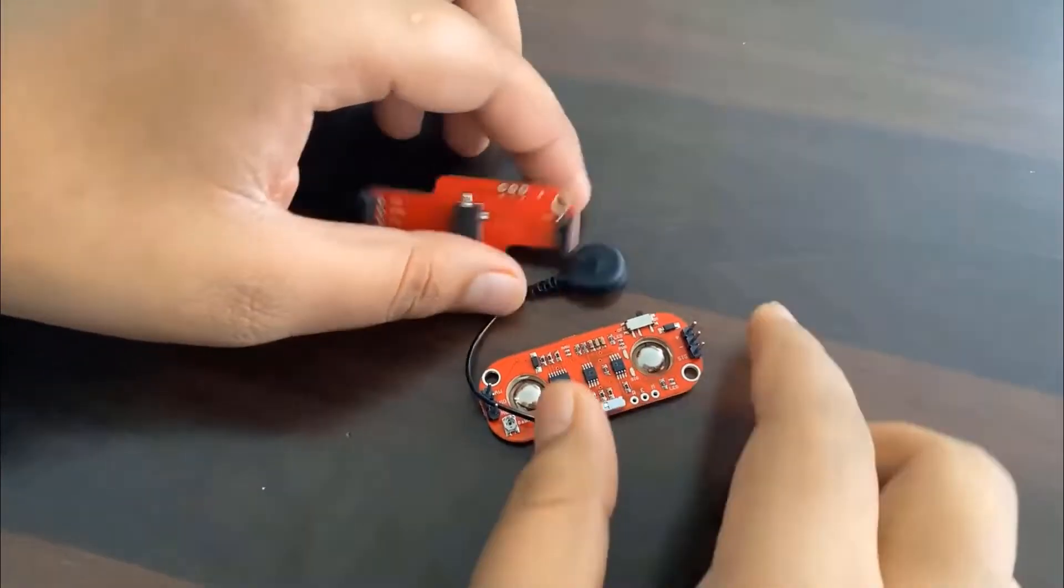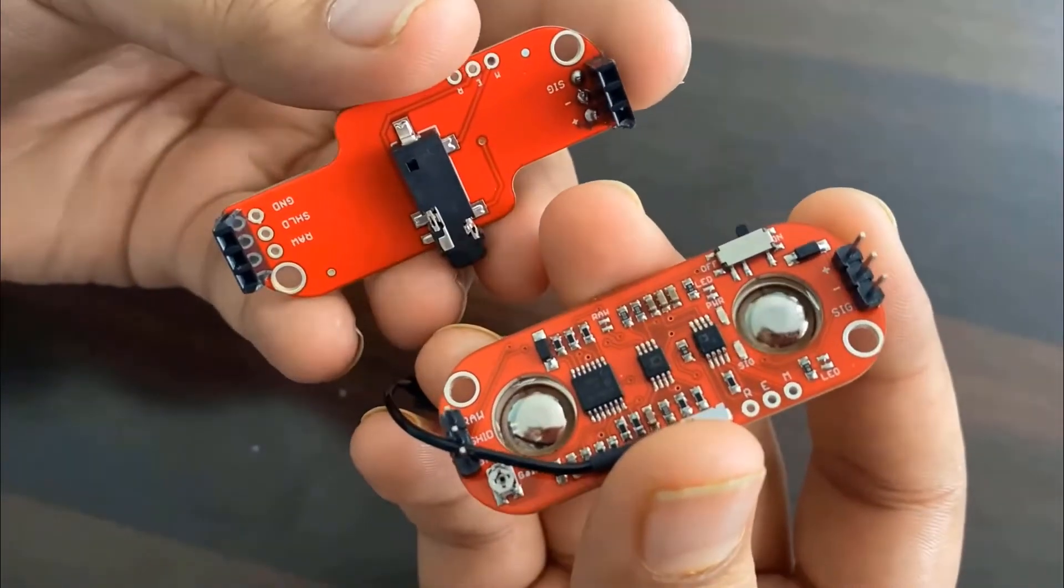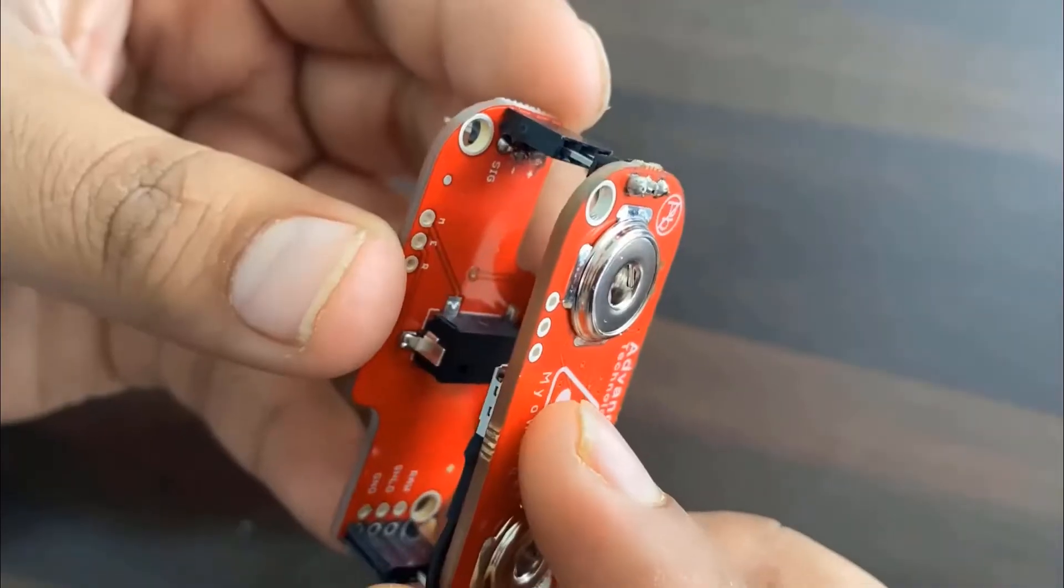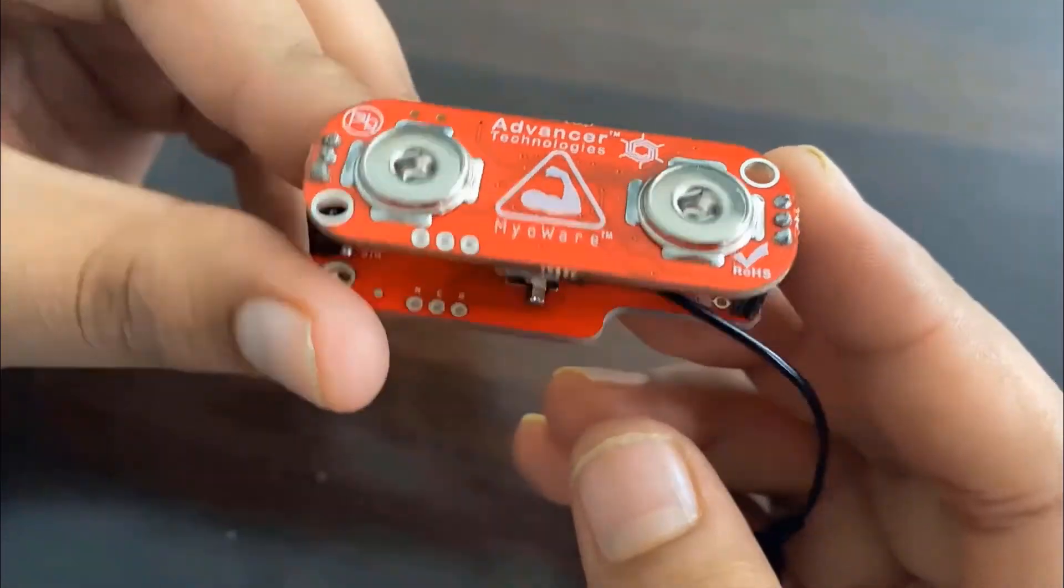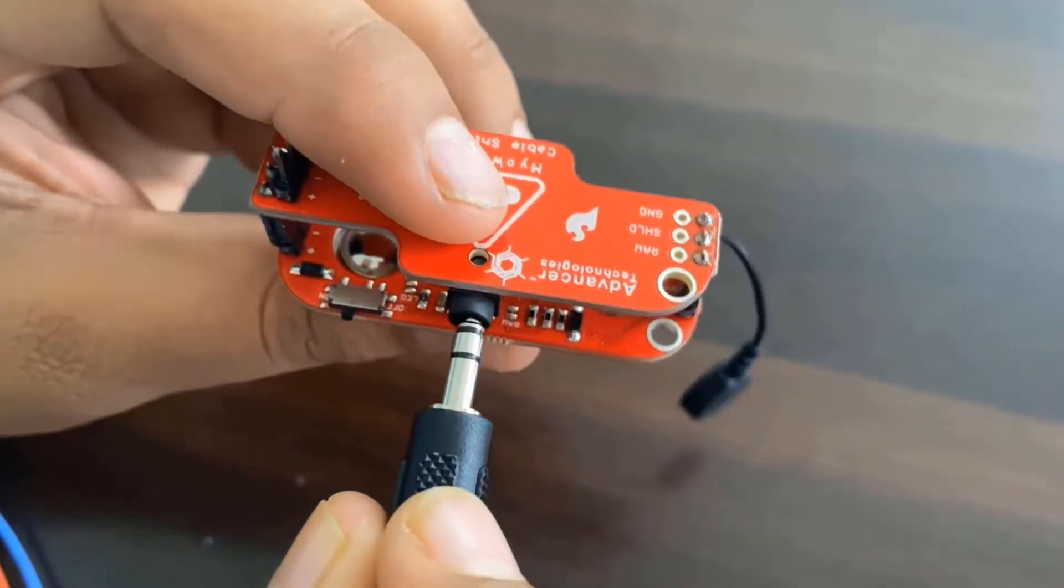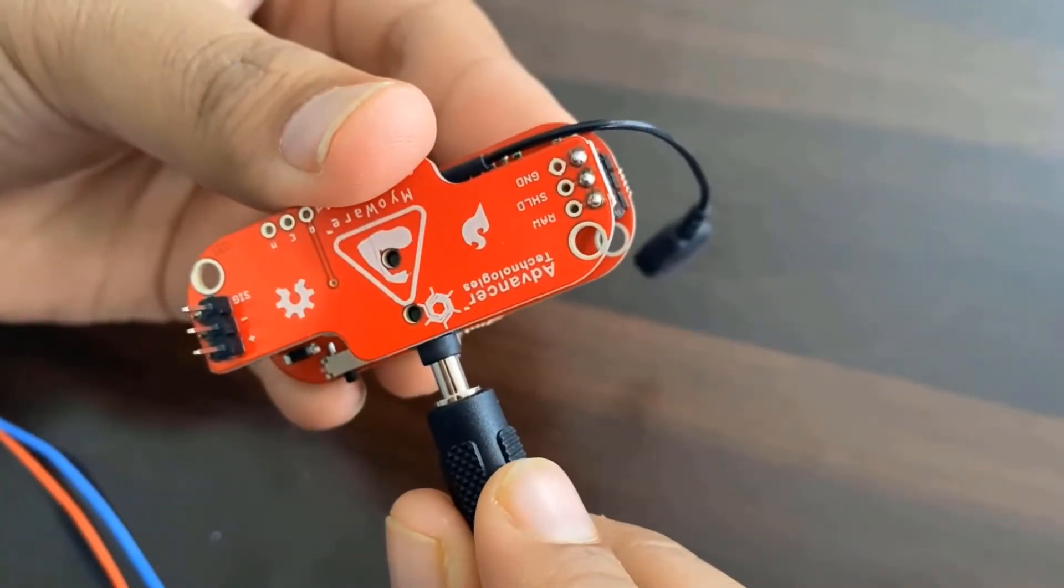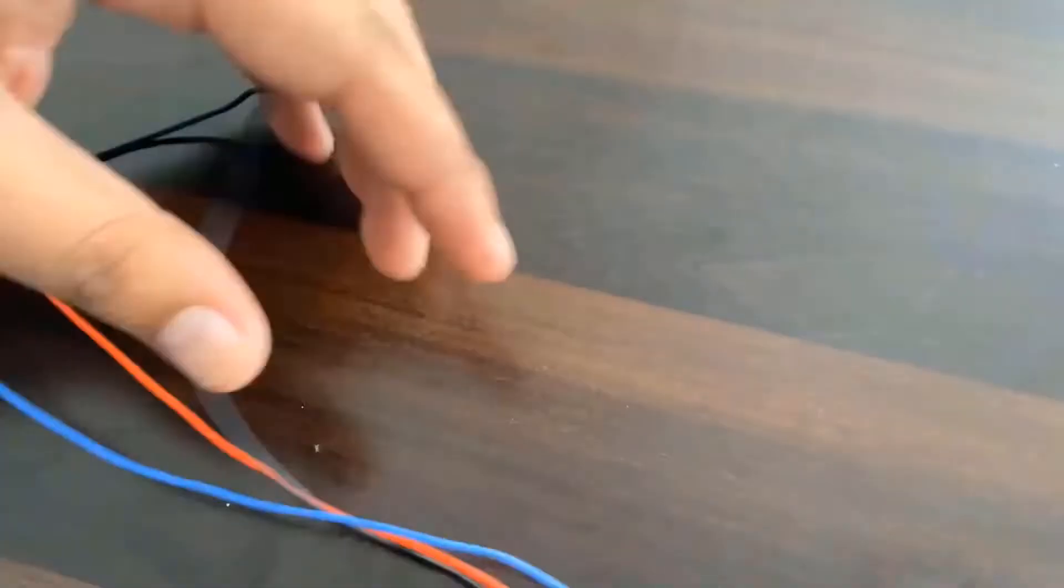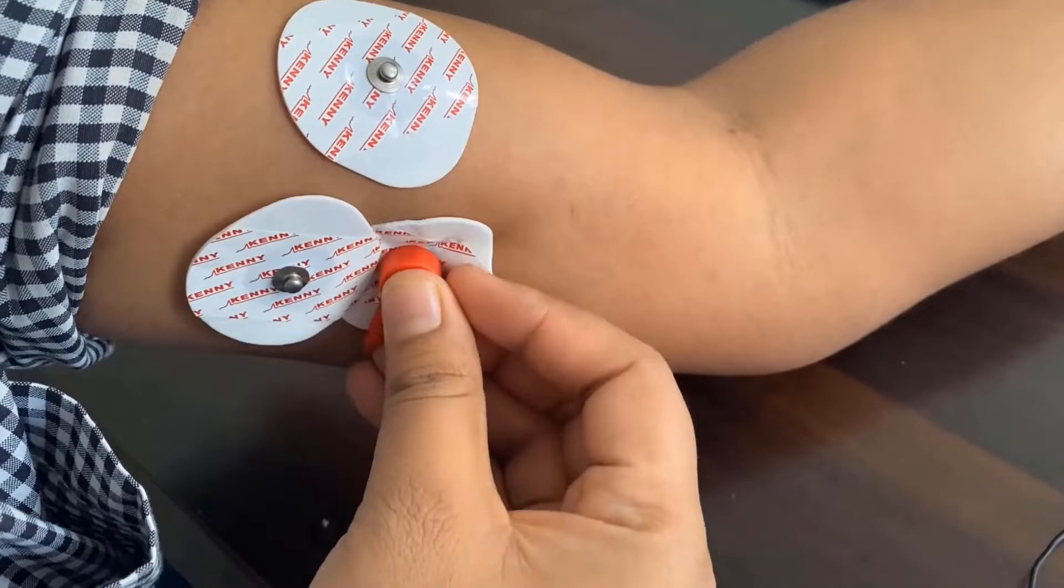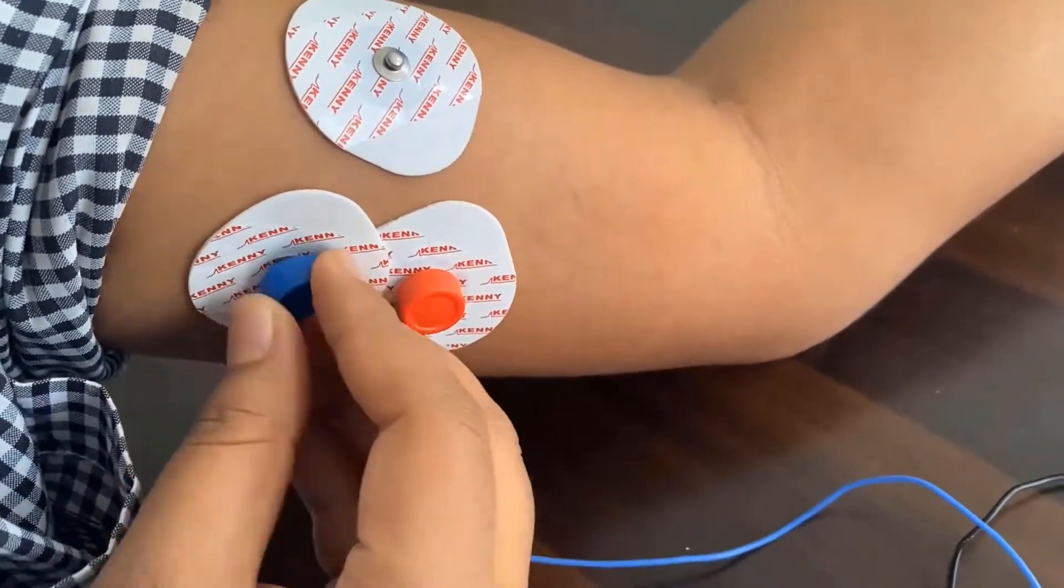Now, here is the Myoware muscle sensor and the Myoware cable shield. Connect them like this. Then insert the 3.5mm audio jack into the connector. After that, attach the three electrodes to the pads. And then connect the Arduino board as per the circuit diagram.